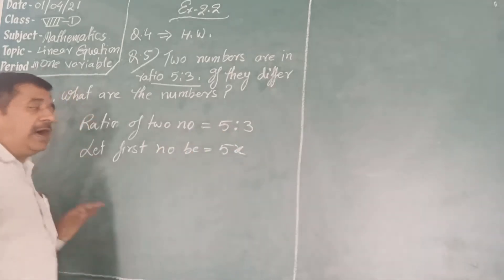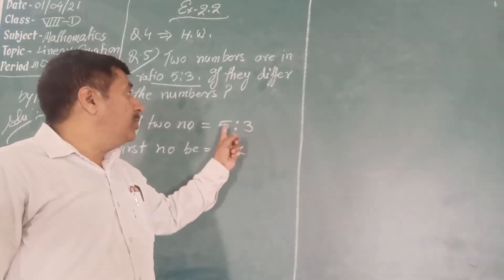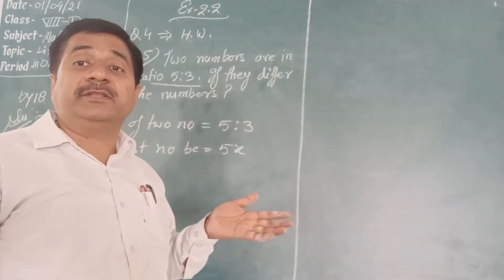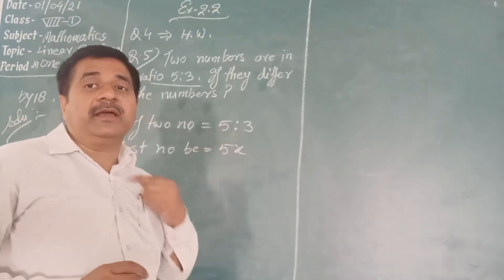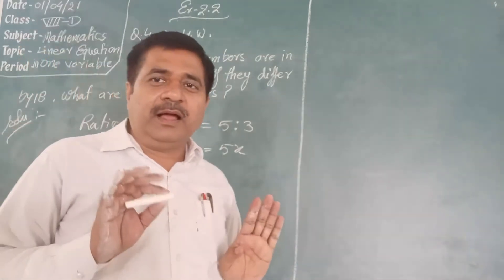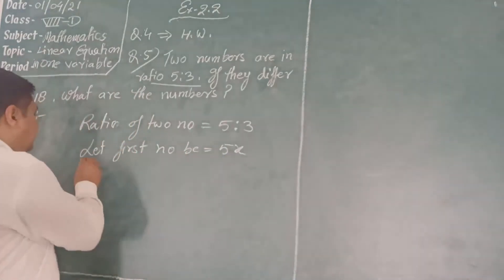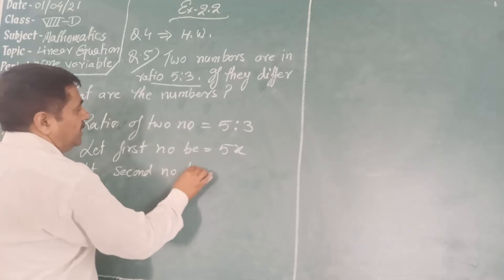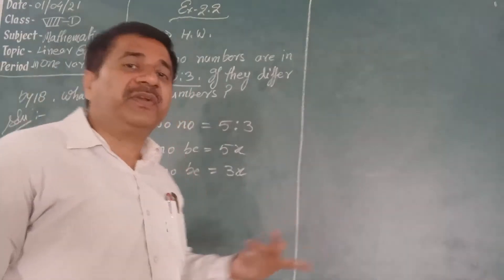Let's say 5x. You know that when you get ratio 5 is to 3, so what will be the second number? Let second number be 3x. Now look at the difference, what are the numbers?